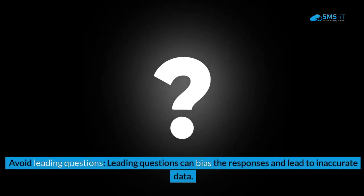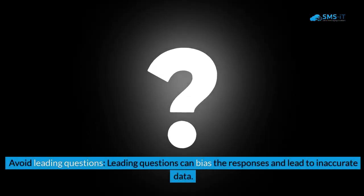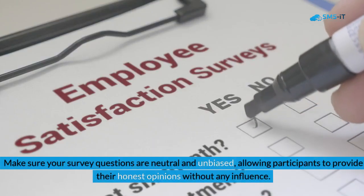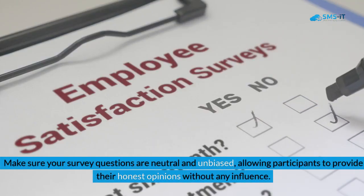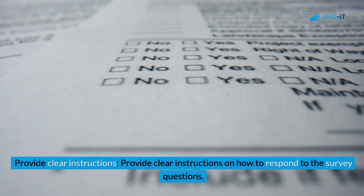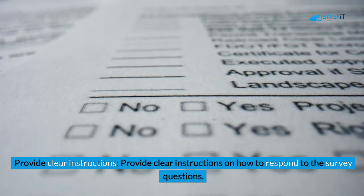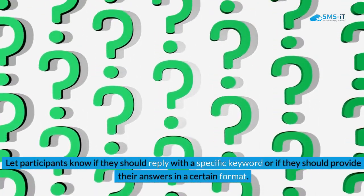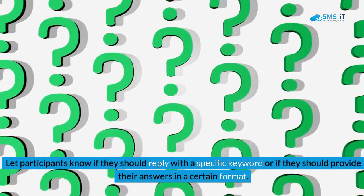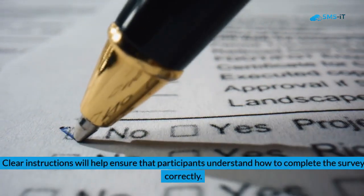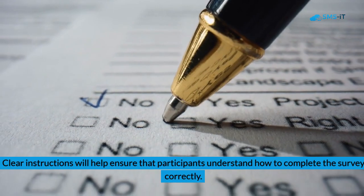Third, avoid leading questions. Leading questions can bias the responses and lead to inaccurate data. Make sure your survey questions are neutral and unbiased, allowing participants to provide their honest opinions without any influence. Fourth, provide clear instructions on how to respond to the survey questions. Let participants know if they should reply with a specific keyword or provide answers in a certain format, to ensure the survey is completed correctly.